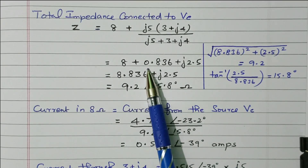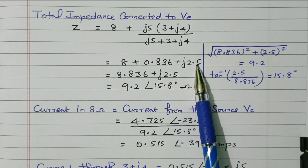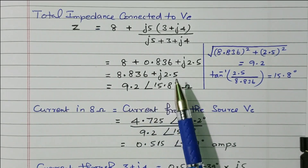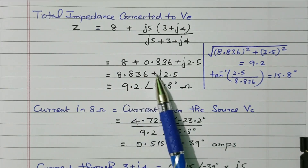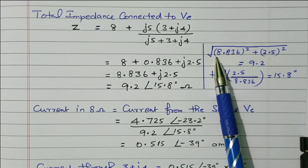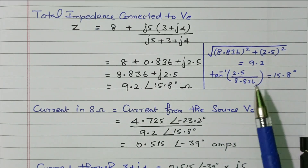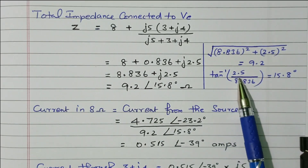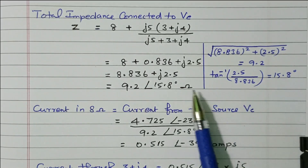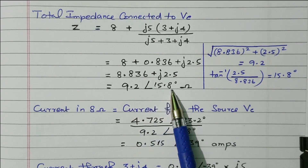What we previously calculated was 0.836 plus J2.5 for the parallel combination. Now adding 8 instead of 5: 8 plus 0.836 plus J2.5 gives 8.836 plus J2.5. Converting to polar form: square root of 8.836 squared plus 2.5 squared equals 9.2. The angle is tan inverse of 2.5 divided by 8.836, which is 15.8 degrees. So the total impedance of network B is 9.2 with an angle of 15.8 degrees.